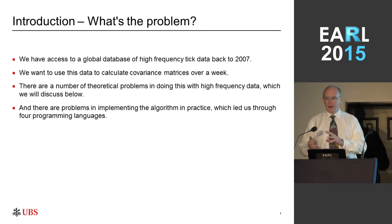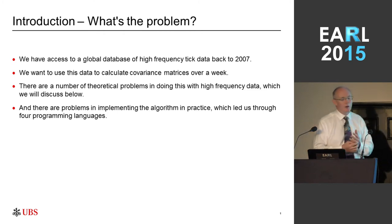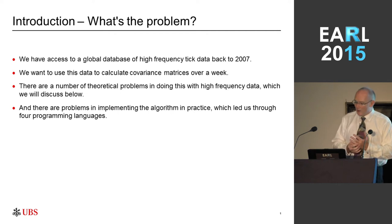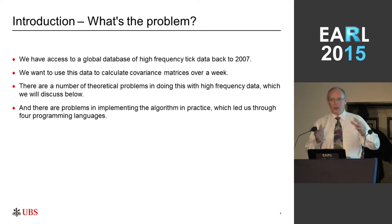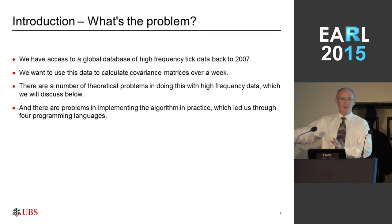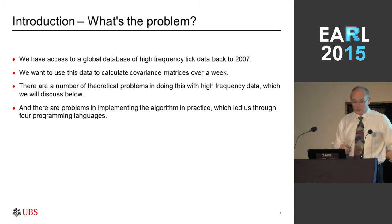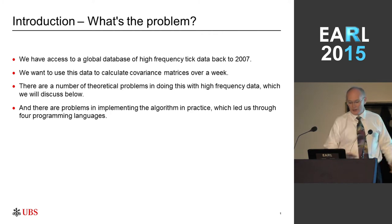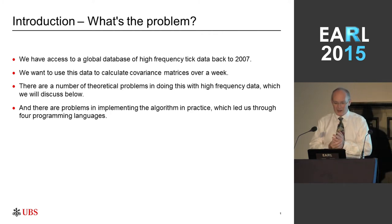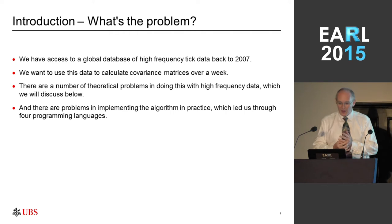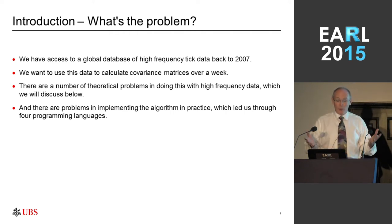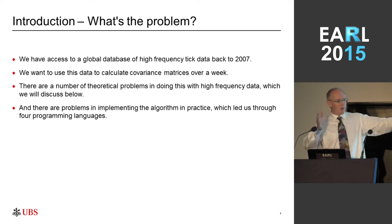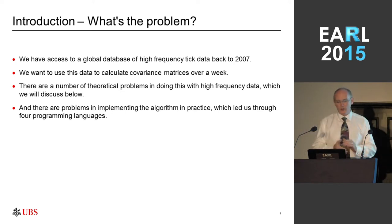Physically moving it around is a challenge. The data sits in London, and if you're not in London, you really don't want to start pulling terabytes of data over the internet connection. What we're wanting to do — the problem we wanted to solve — is very simple: take our stock returns, take a week's worth of data for every single stock in a certain universe, and calculate a covariance matrix.